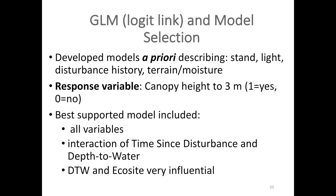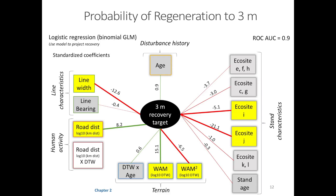The table shows all the predictor variables influencing this 3-meter recovery target. The ones highlighted in yellow were considered the most influential. Eco-site J, which is in a fen, had a very strong negative relationship with the seismic line reaching the 3-meter recovery target. Depth to water from the wet areas mapping was also a very strong predictor, as well as line width and distance to the nearest road.